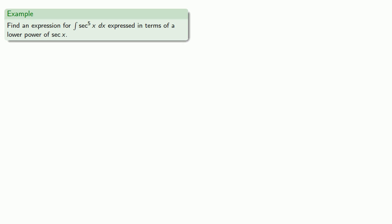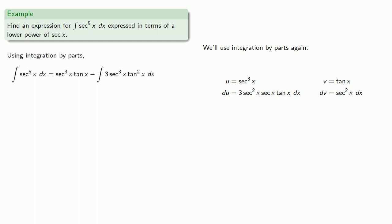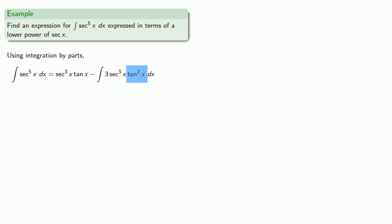We'll use integration by parts again. Since we know what the antiderivative of secant squared x is, we'll go ahead and make that be our dv, which means u has to be the remaining factors of secant. Integrating and differentiating, then applying the integration by parts formula gives us our expression. Again, we have the square of tangent, so we can rewrite this in terms of the square of secant.